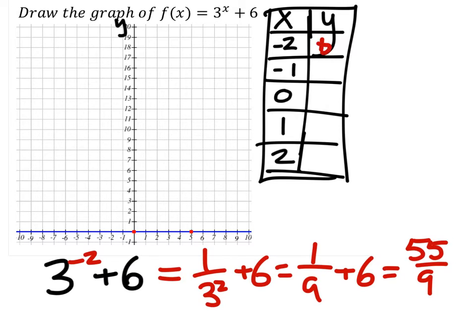So 55 ninths would be the y value. So negative 2 and 55 ninths, that would just be 6 and a ninth, which would be about right here.